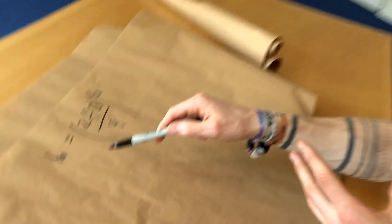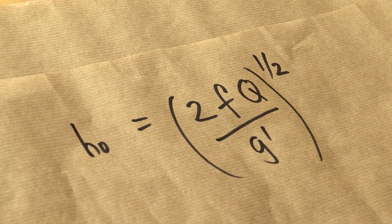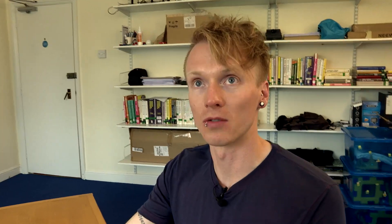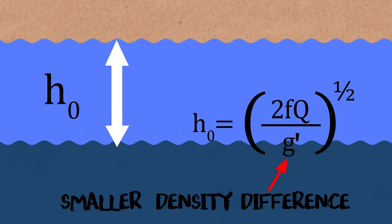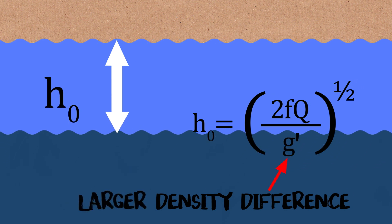And you can think a little bit about whether this makes sense. This is saying that the river current gets deeper when your rotation rate is larger. It says the river current gets deeper when your volume flux is larger. If you have more water leaving your river, you expect the resulting current to be deeper. And then finally it says that it's deeper when your density difference is smaller.